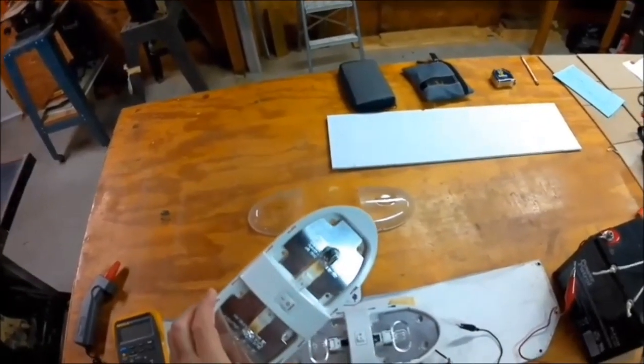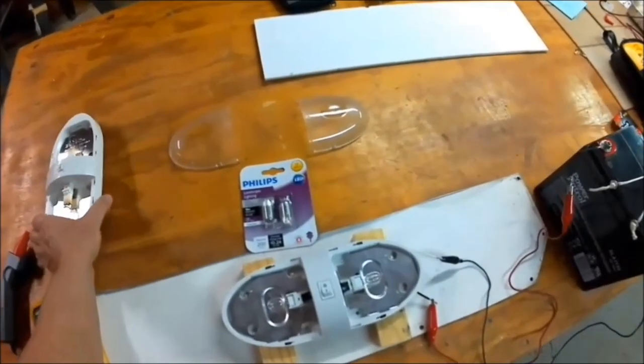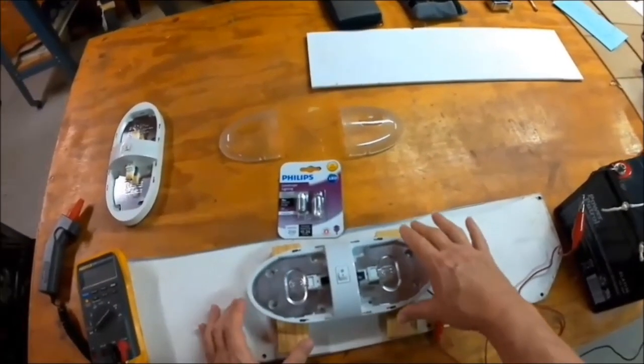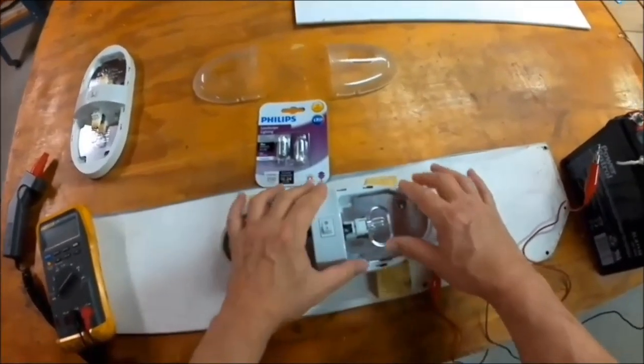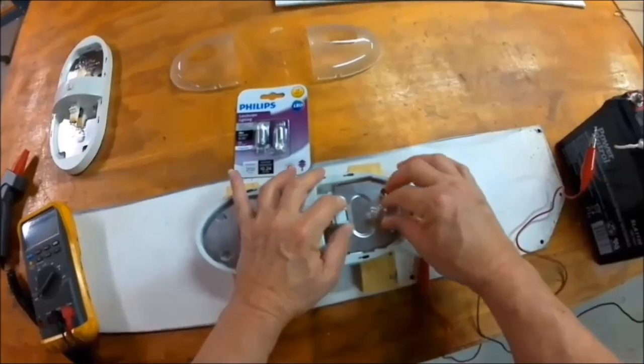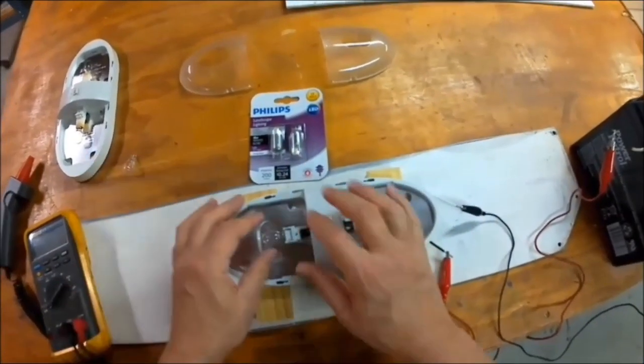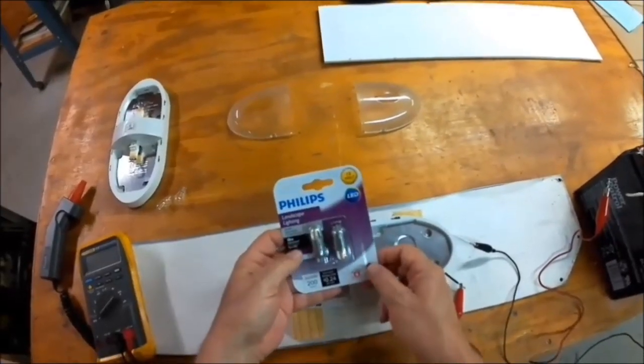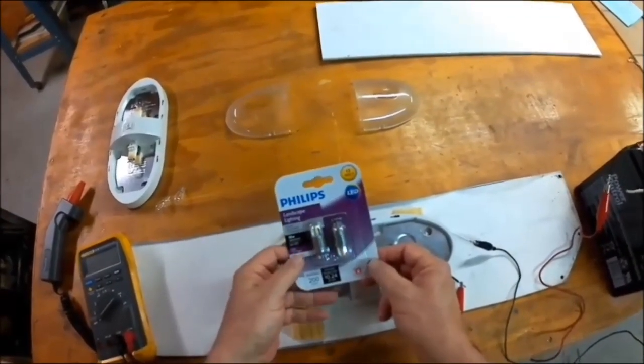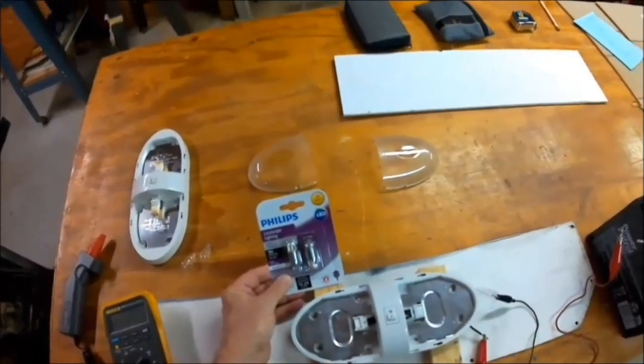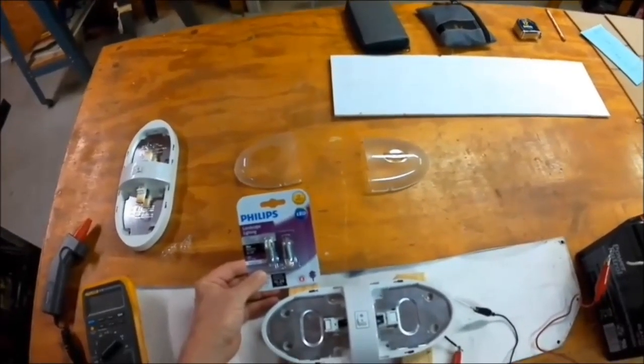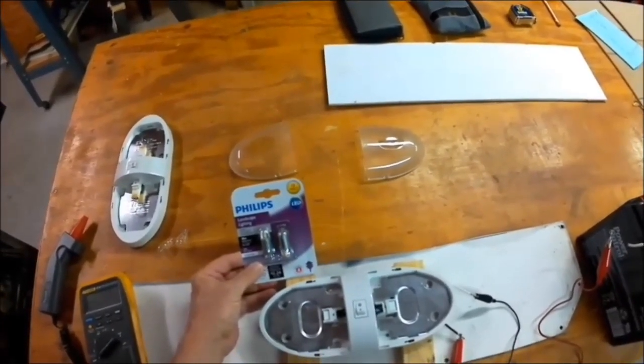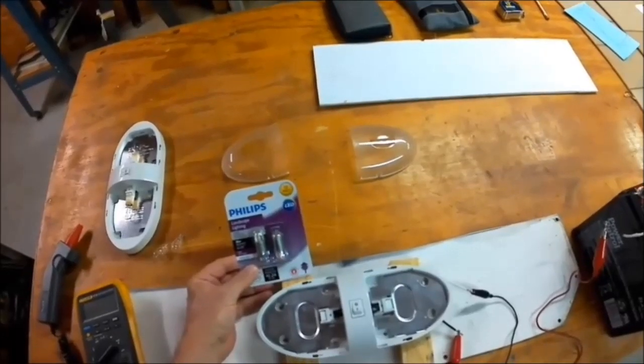Now I'm going to change out this burnt light fixture with the new one I bought. First, I'm going to change out these 921 incandescent bulbs with these LED replacements. These LED bulbs are only 2 watts compared to the 18 watts of the 921 bulbs.